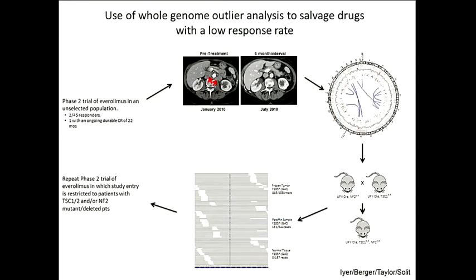So this is really the paradigm: we do an unselected clinical trial, take patients on these studies, and focus on the few patients who responded. We do genetics, identify alterations that are likely the molecular basis of those responses. You always need to go back to the lab to do functional validation to make sure these things are actually real.